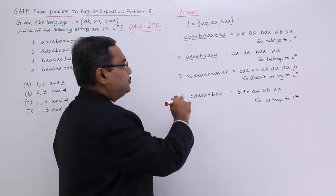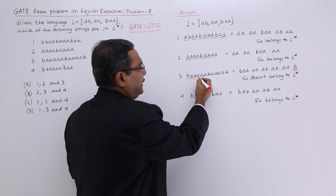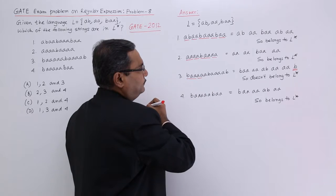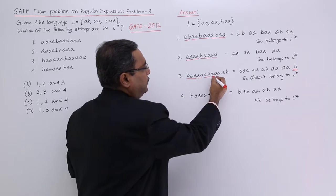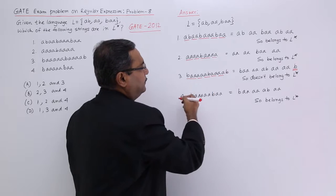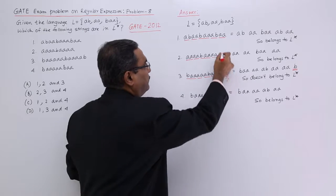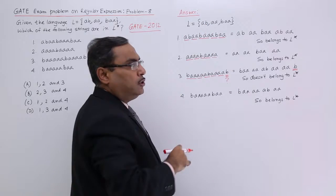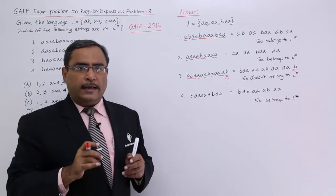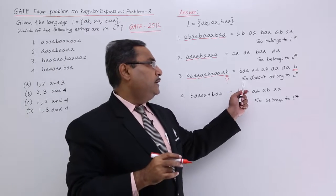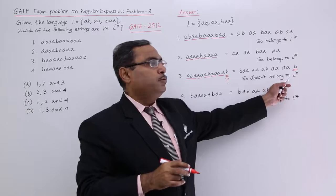Now come to this one. It is about BAAAAAAAAA. Then we are having AB and two times AA, and this B has a problem because there is no string in L that is just B. So that is why it does not belong to L star.